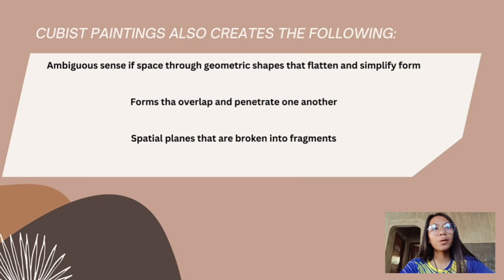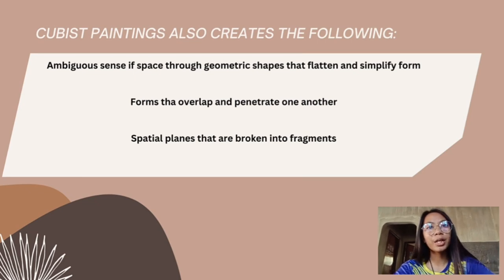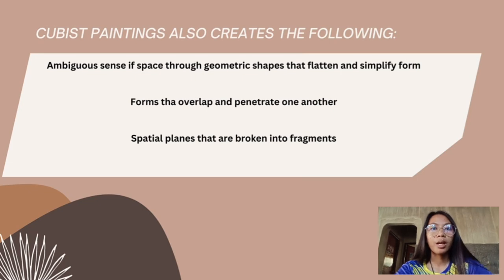Cubist painting also creates an ambiguous sense of space through geometric shapes that flatten and simplify form. Forms overlap and penetrate one another, and spatial planes are broken into fragments. Art historians generally consider Cubism to have been the most influential art movement of the first half of the 20th century, and the exact date of Cubism's first appearance in art has been the subject of heated debate among art historians.